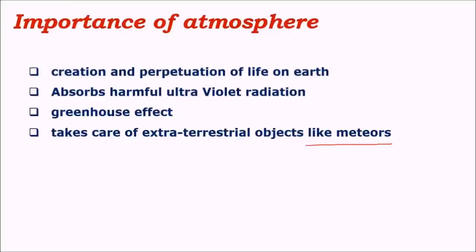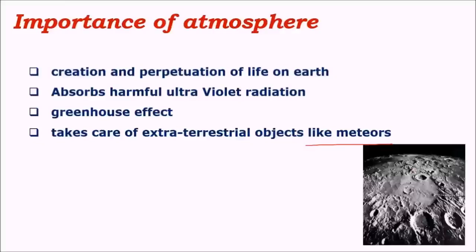Meteors are parts of the asteroid belt, which revolves around the sun between the orbits of Mars and Jupiter. This belt contains small rocks with radii varying from a few meters to a few kilometers. These rocks sometimes escape from the asteroid belt and move towards earth. Attracted by earth's gravitational pull, they enter the earth's atmosphere. As the atmosphere gets thicker closer to earth, enough friction is created for these rocks to burn up completely in the mesosphere.